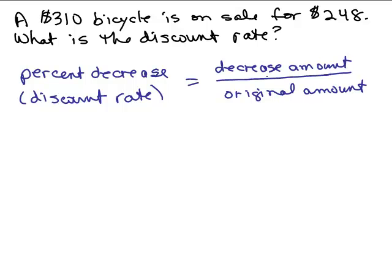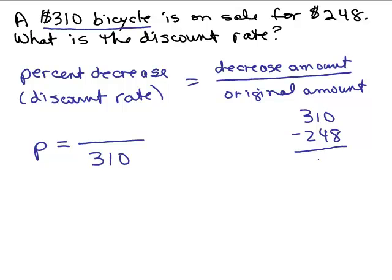And I'm not given that decrease amount. I know the original amount. It was a $310 bicycle. So I'm looking for a percent here. I need to find the decrease amount, in other words, how much off was it in terms of money? All we need to do is subtract. 310 minus 248, I think that's 62. So it was decreased by $62. Be careful that you don't put 248 in the numerator.